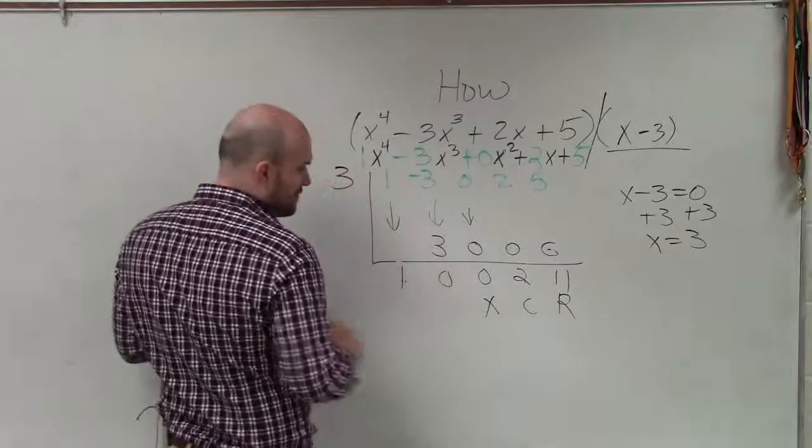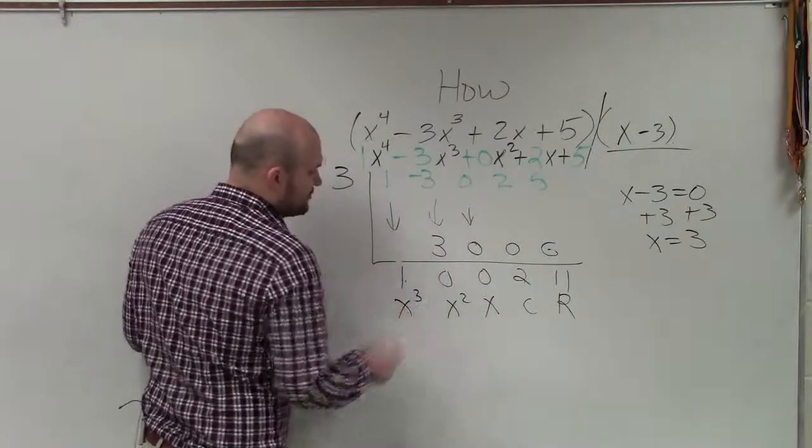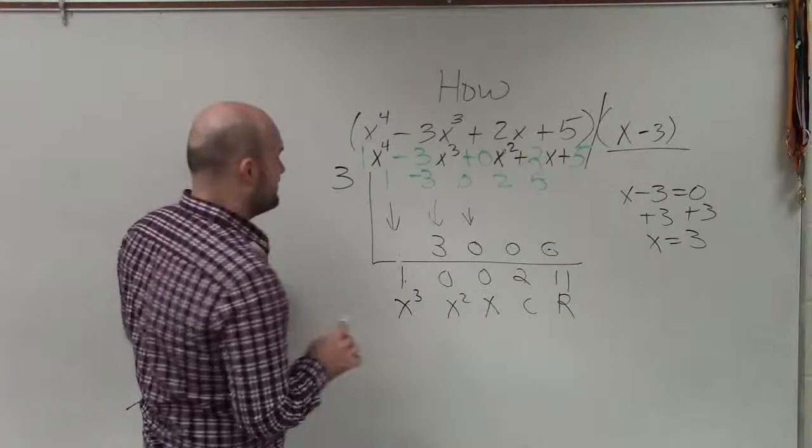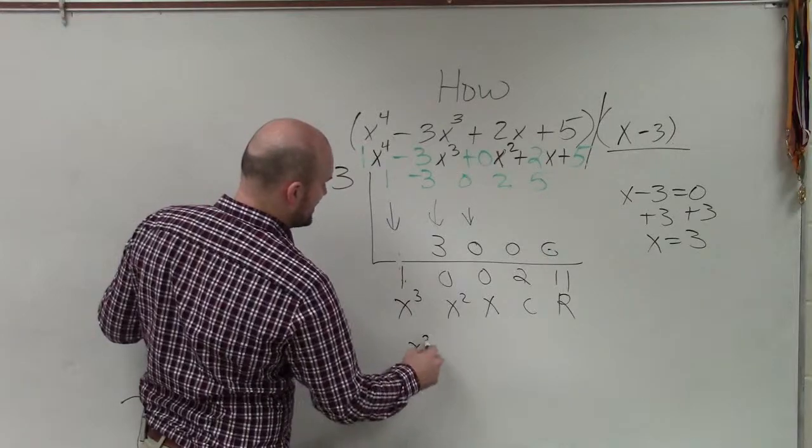That is my coefficient for my x term. This is the coefficient for my squared term. And this is the coefficient for my cubic term. So therefore, my term is just going to be 1 times x cubed, which is x cubed.